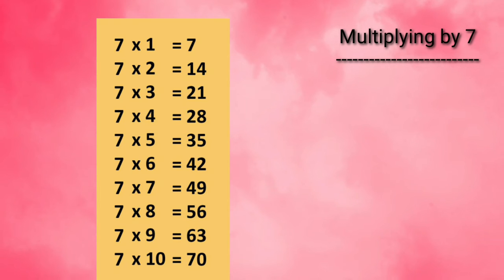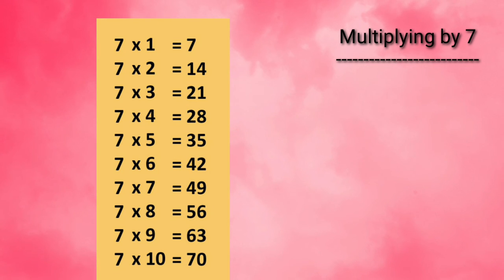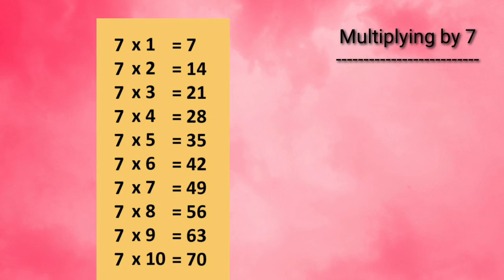7 times 7 is 49. 7 times 8 is 56. 7 times 9 is 63. 7 times 10 is 70.